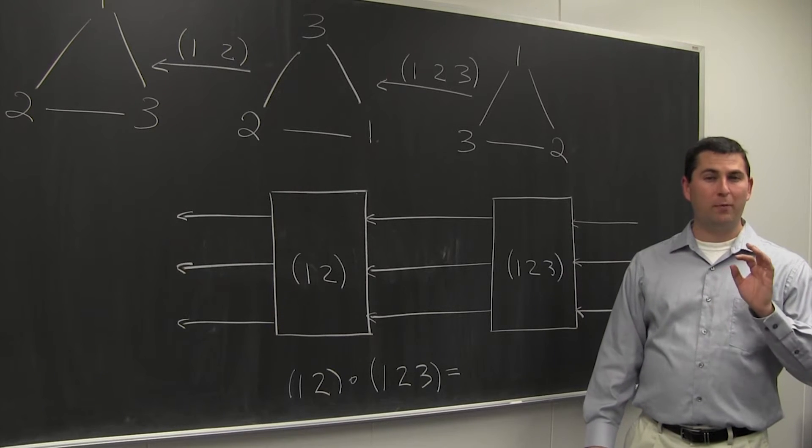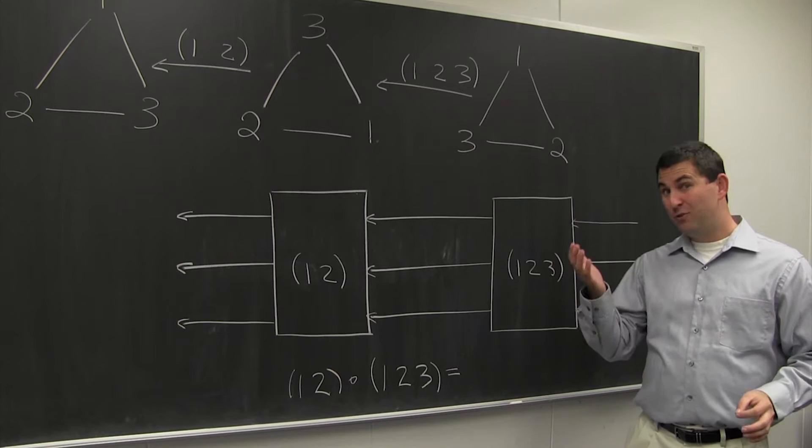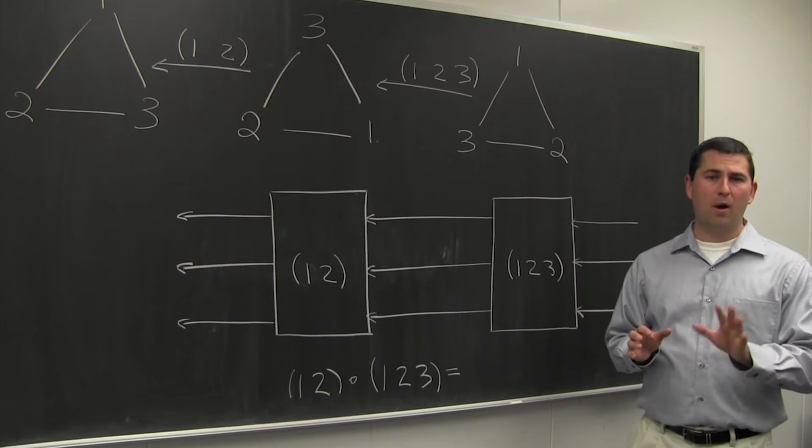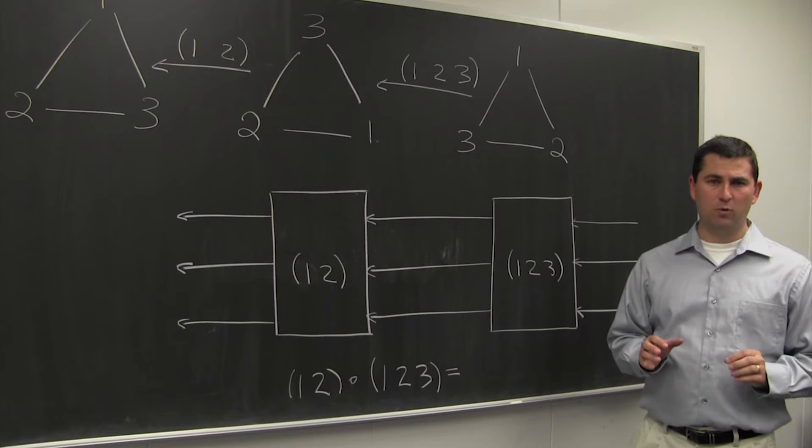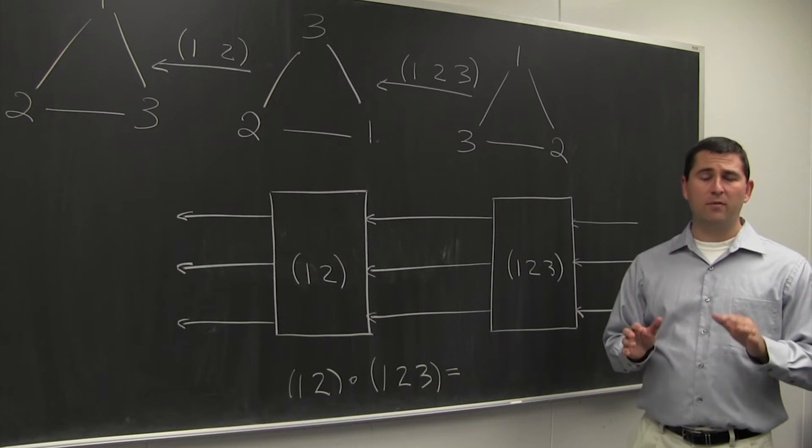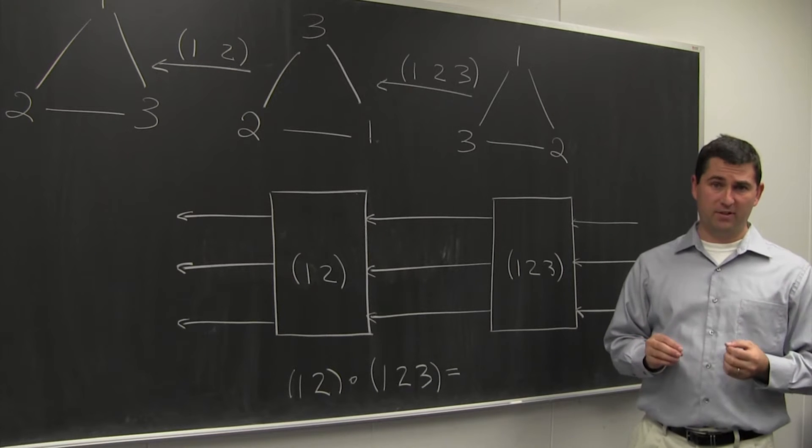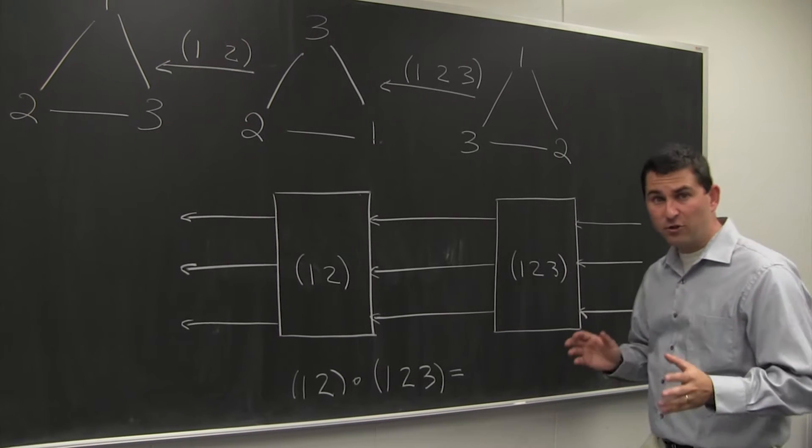So why do the students get 1, 3 without the diagram, and 2, 3 with the diagram? Most students don't properly understand how the cycle notation works. And many have a misunderstanding of the right-to-left convention for function composition. So let's see how it actually works here.